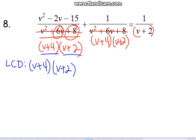It's just the last one that needs it. So we multiply. It's missing the v plus 4 piece. Multiply both your top and bottom by v plus 4.